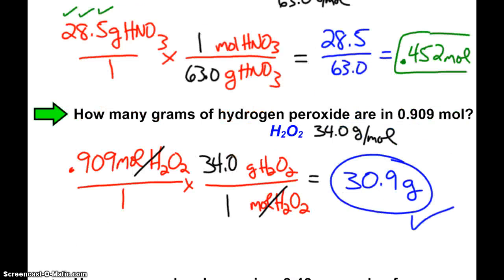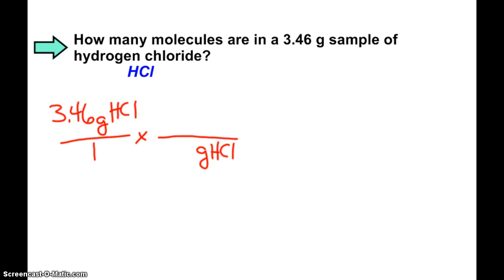And that's what dimensional analysis would lead me through, if you'd rather do it that way. So, I've got to change my grams to mole, and then my moles to molecules. HCl, hydrogen, plus a chlorine, is 36.5.